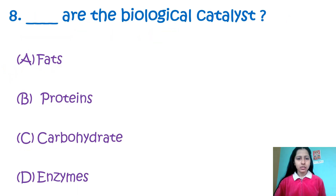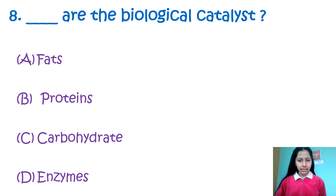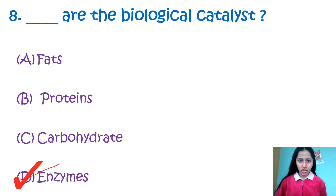Question 8: Dash are the biological catalysts — Fats, Proteins, Carbohydrates, or D: Enzymes. Enzymes are the biological catalysts — a very easy answer. Enzymes are actually proteins that act as biological catalysts by accelerating chemical reactions.